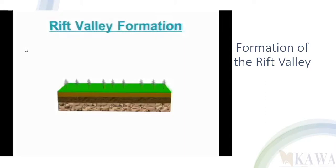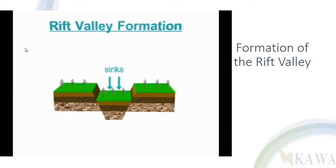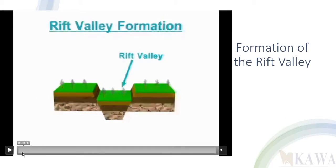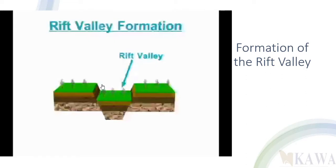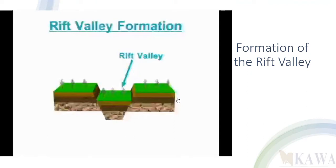Now watch the video of the formation of the rift valley. Cracks are formed, then the central block sinks — this process is known as the tension process. Another process is compression, where forces pull and push from different sides and the central block goes up. Thank you for your kind attention; in the next video we shall look at the formation of block mountains.